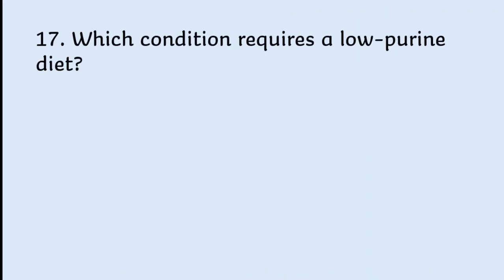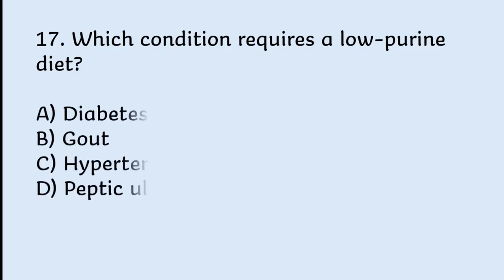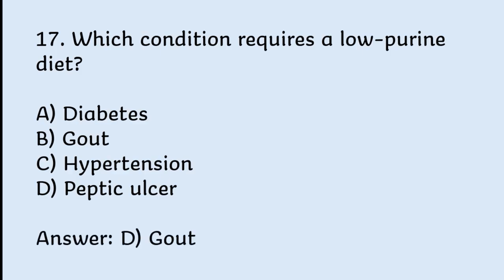Which condition requires a low purine diet? Options: diabetes, gout, hypertension, peptic ulcer. Correct answer is gout.